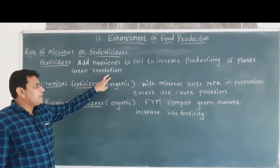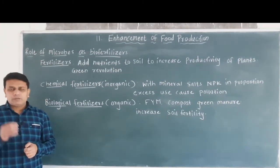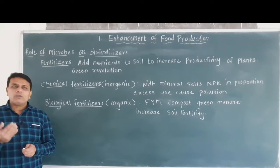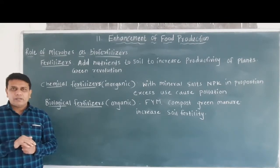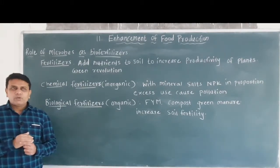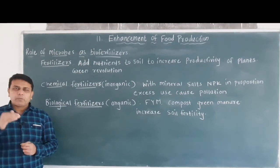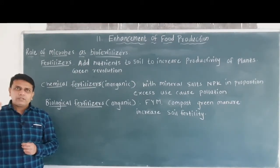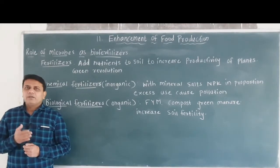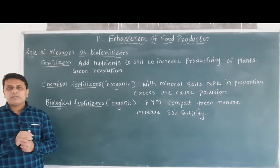The period after 1960 is called the Green Revolution. The main aim of the Green Revolution was to increase the yield or productivity of crops by using different types of fertilizers, insecticides and pesticides. The population is growing day by day, so to fulfill the food requirements of the growing population, it is necessary to increase the productivity of crops. Therefore, different kinds of fertilizers are used to increase productivity, and insecticides and pesticides are used to protect the crops.